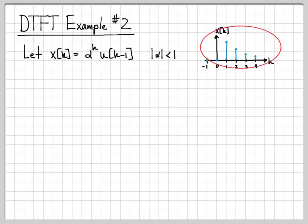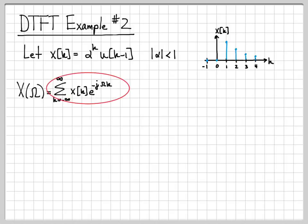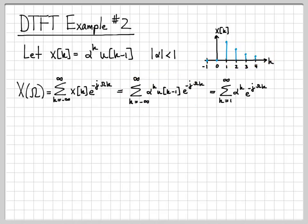So this sketch over here really just helps us as we do our computation to know where to start the time index when we need to start adding up terms in the DTFT definition. So speaking of the DTFT definition, here it is. This is just the definition of the DTFT. The DTFT is notated x of omega. So this infinite sum is what we need to evaluate for this particular x of k. So I'm going to go ahead and plug in the x of k that we're working with, alpha to the k times u of k minus 1 times e to the minus j omega k.